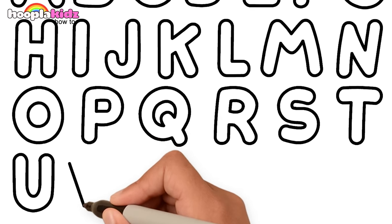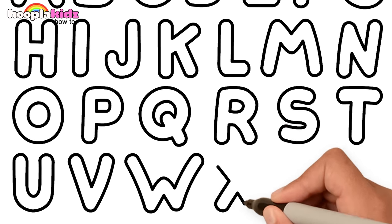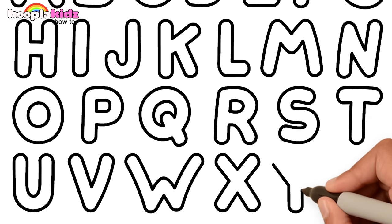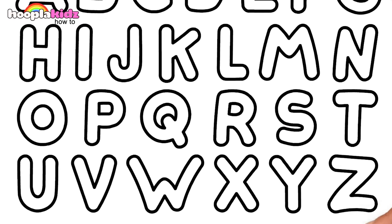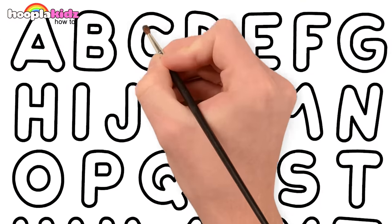U, V. What's next? That's right, it's W, X, Y, and Z. Now we know our ABCs, this time won't you paint with me.